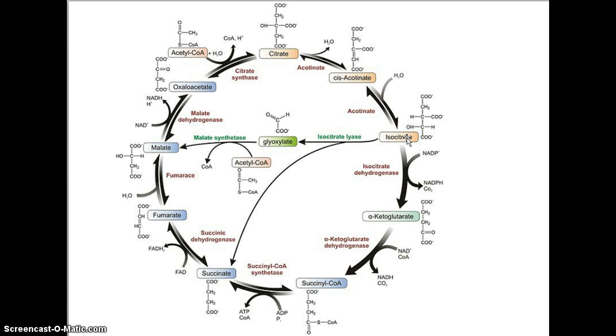So isocitrate, still got a 6-carbon, but not for much longer. Dehydrogenase, removing protons. Decarboxylase as well. Isocitrate dehydrogenase, but there's decarboxylase activity. 6-carbon down to 5-carbon: 1, 2, 3, 4, 5. Alpha-ketoglutarate. Remember, lots of amino acids being produced off this. It's a nice carbon skeleton.